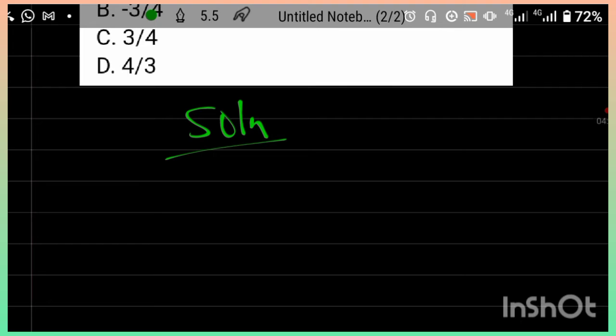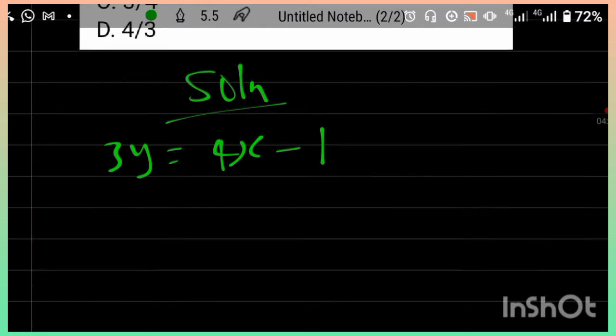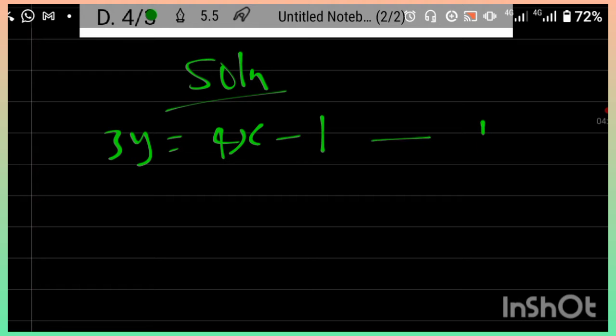Let's write the equation of the given lines. 3y is equal to 4x minus 1, this is equation 1. ky is equal to x plus 3, equation 2.